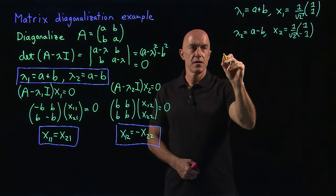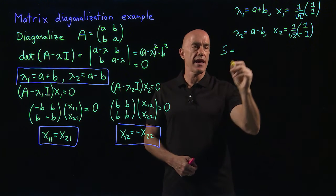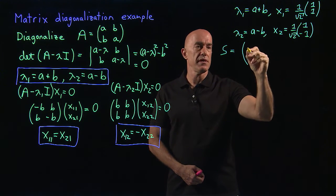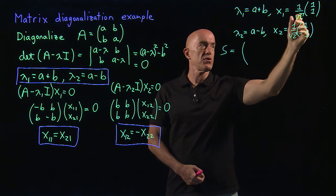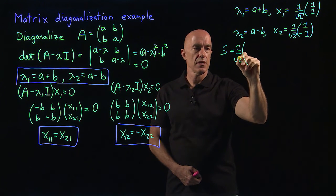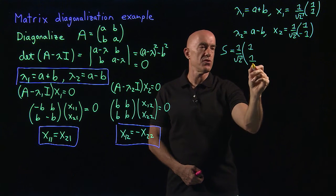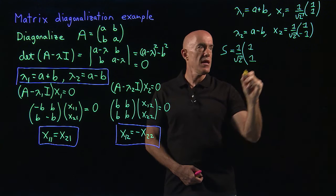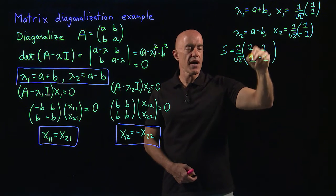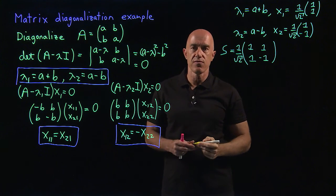The S matrix used to diagonalize A has the eigenvectors as its columns. The first eigenvector is (1/√2, 1/√2) and the second is (1/√2, −1/√2). Factoring out the one over root two, we can write S as one over root two times the matrix with columns (1, 1) and (1, −1).